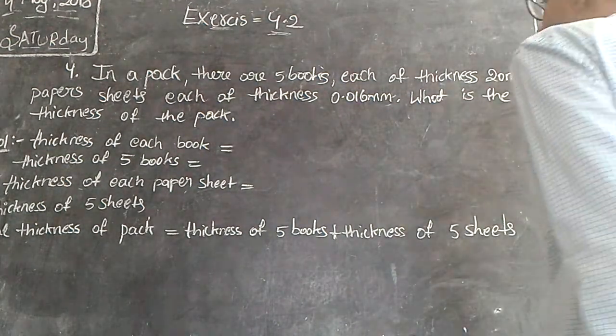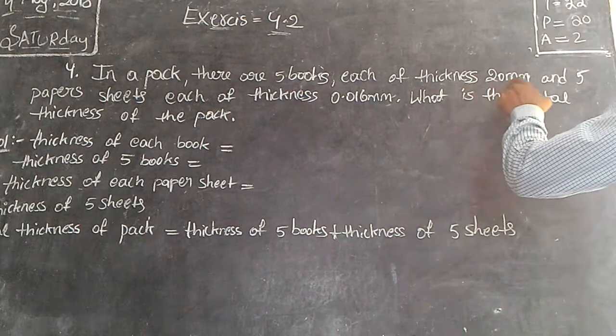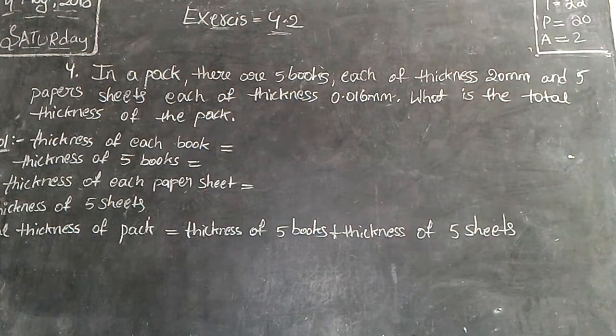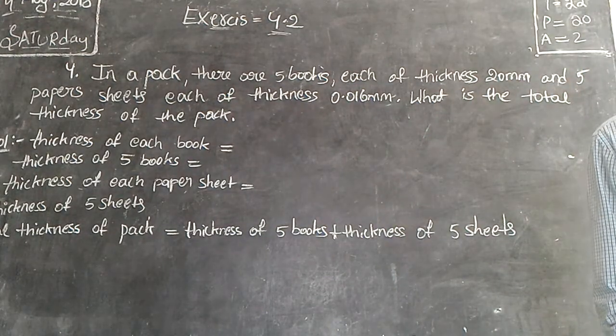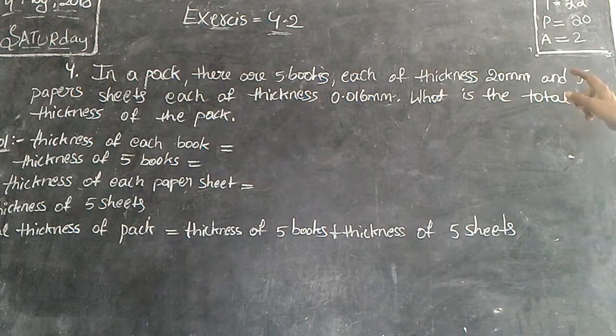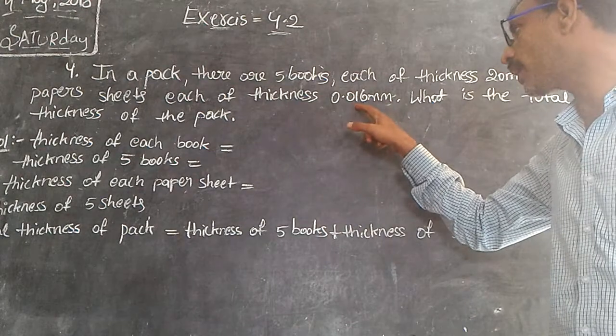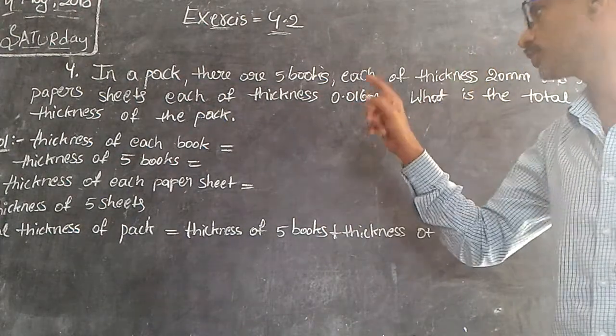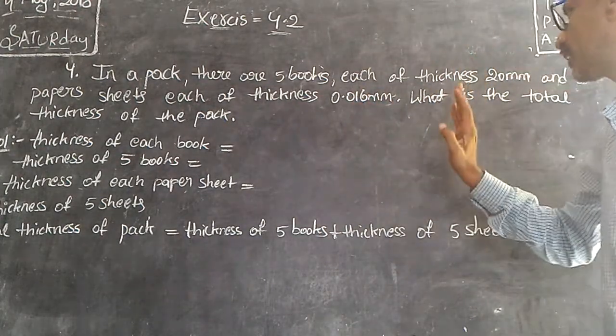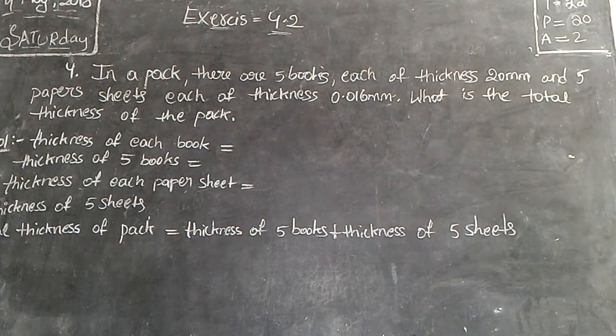In a pack there are 5 books, each of thickness 20 mm, and 5 paper sheets each of thickness 0.01 mm. What is the total thickness of the pack?